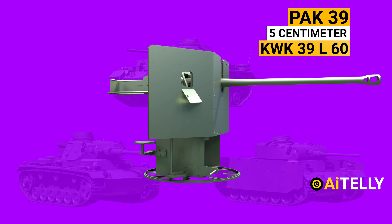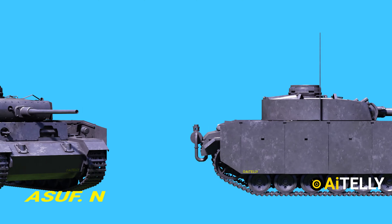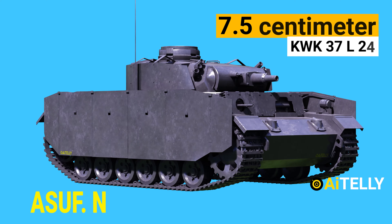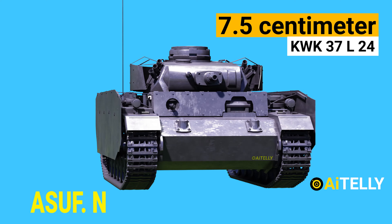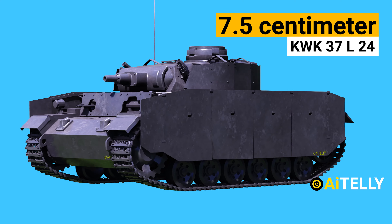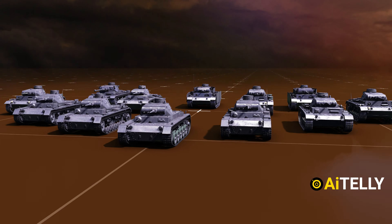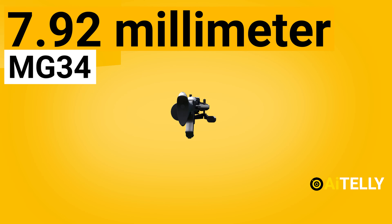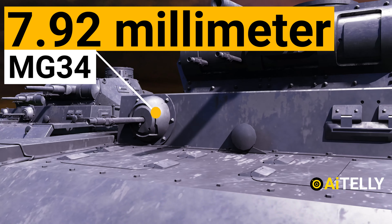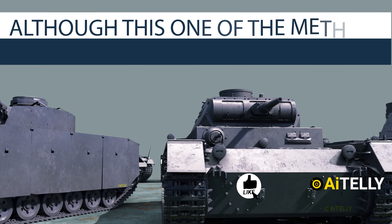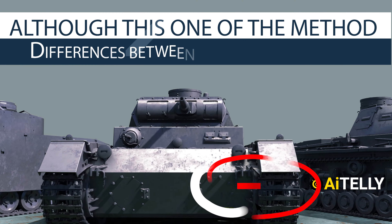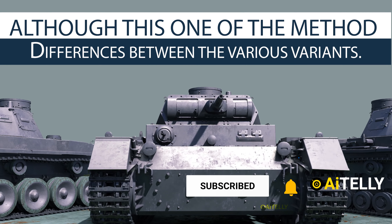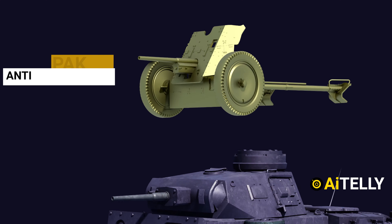Lastly, the Ausf N variant was fitted with the 7.5 centimeter KwK 37 L/24. For secondary armament, all variants were fitted with a 7.92 millimeter MG 34 machine gun. Although this is one method to differentiate between the various variants, the Germans would always upgrade the turrets as well as the armaments.